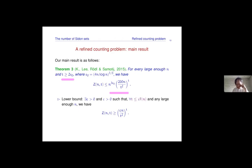The upper bound Z(N, t) is roughly — ignoring the small term N raised to 3s₀ — the main term is 200N over t² raised to the t. We have a matching lower bound of the form constant times N divided by t² raised to the t. The constant differs and we don't have the small correction term, but the main term is the same: (N/t²)^t.